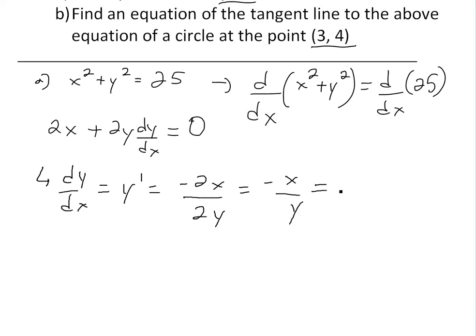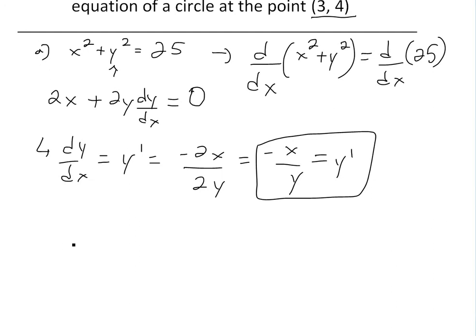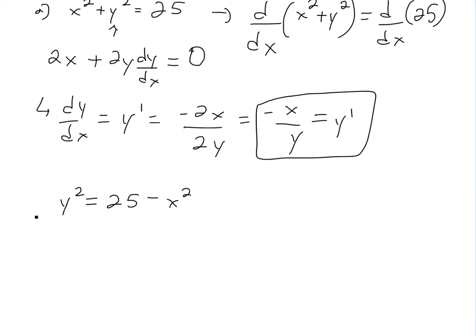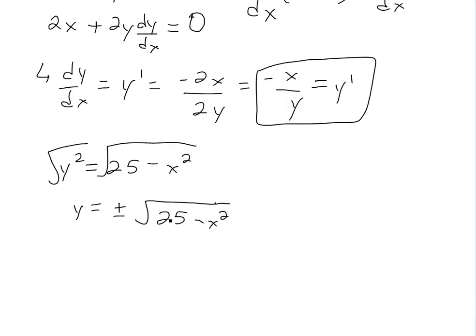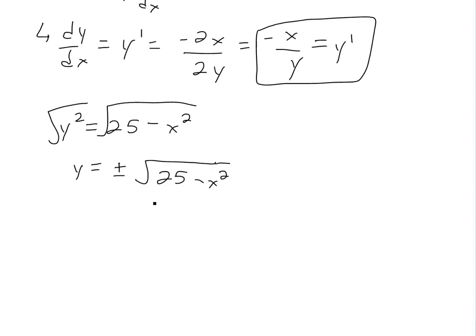So dy over dx equals negative x over y is our answer. To verify this is correct, note that the result is in terms of y. If we solve the equation for y, we get y squared equals 25 minus x squared, and taking the square root gives y equals plus or minus the square root of 25 minus x squared. We need the plus or minus because squaring a negative gives a positive, so we include both cases. This means the implicit function is actually made up of two functions — both semi-circles.